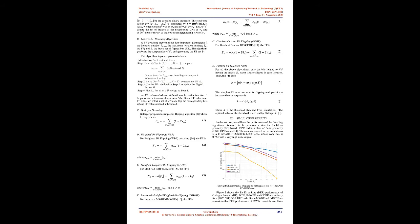The generic BF decoding algorithm has four important parameters: the iteration number, the maximum iteration number, the FF, and the index set of flipped bits, FB. The algorithm performs the computation of FF and generates the FB set. For gradient descent bit flipping, GDBF, the FF is defined as a function of the hard decision values and the check node syndrome values, serving as a cost function or inversion function. It helps to take a tentative decision on a VN. Given FF values and FB rules, we select a set of VNs and flip the corresponding bits whose FF values exceed a threshold.